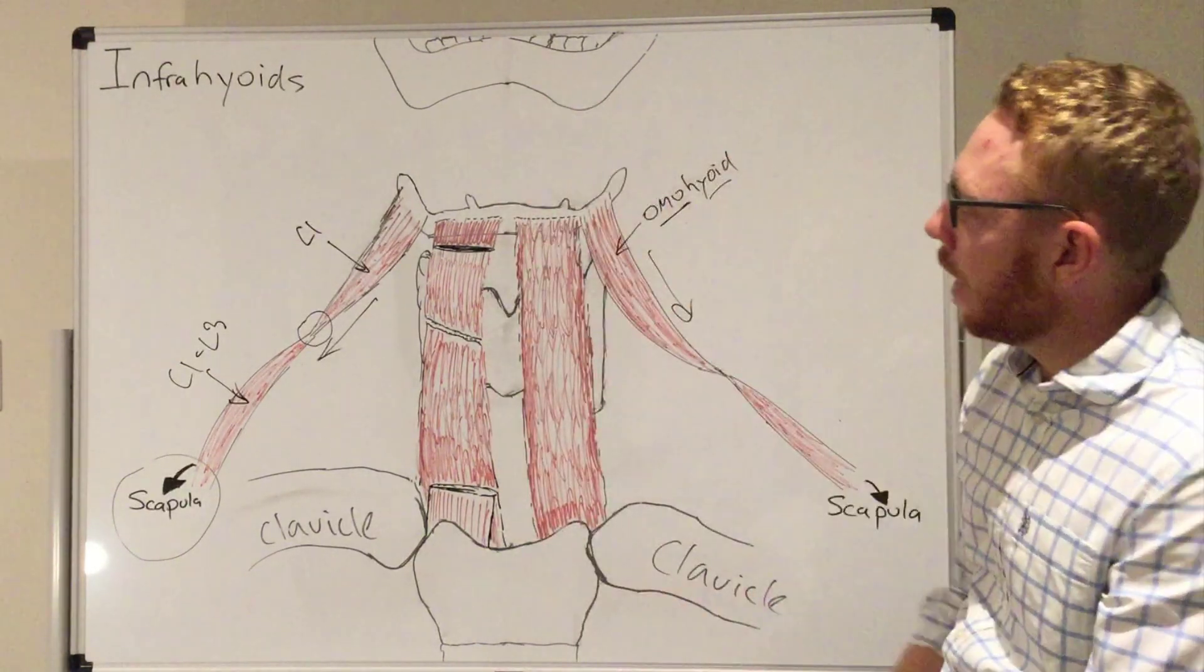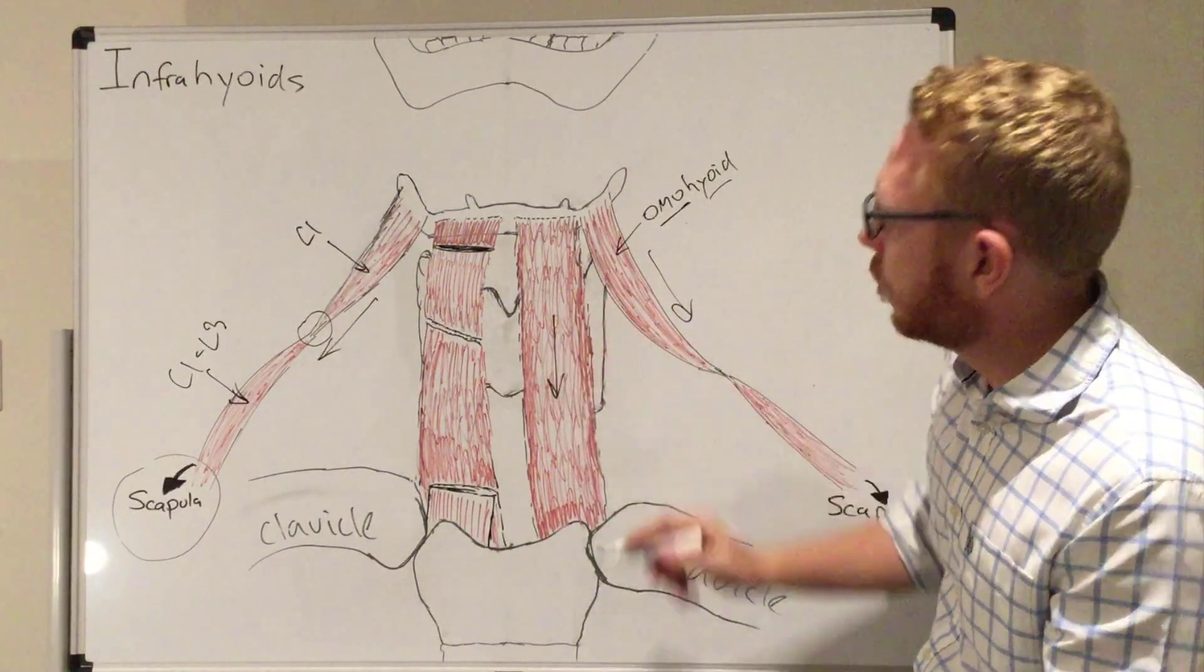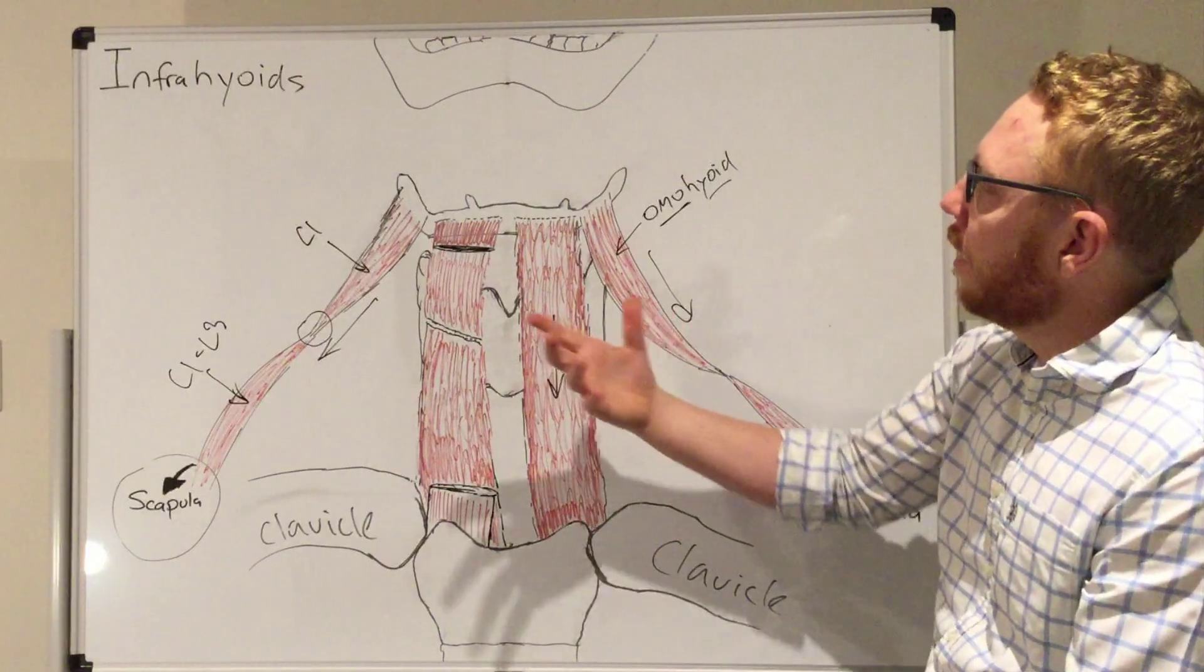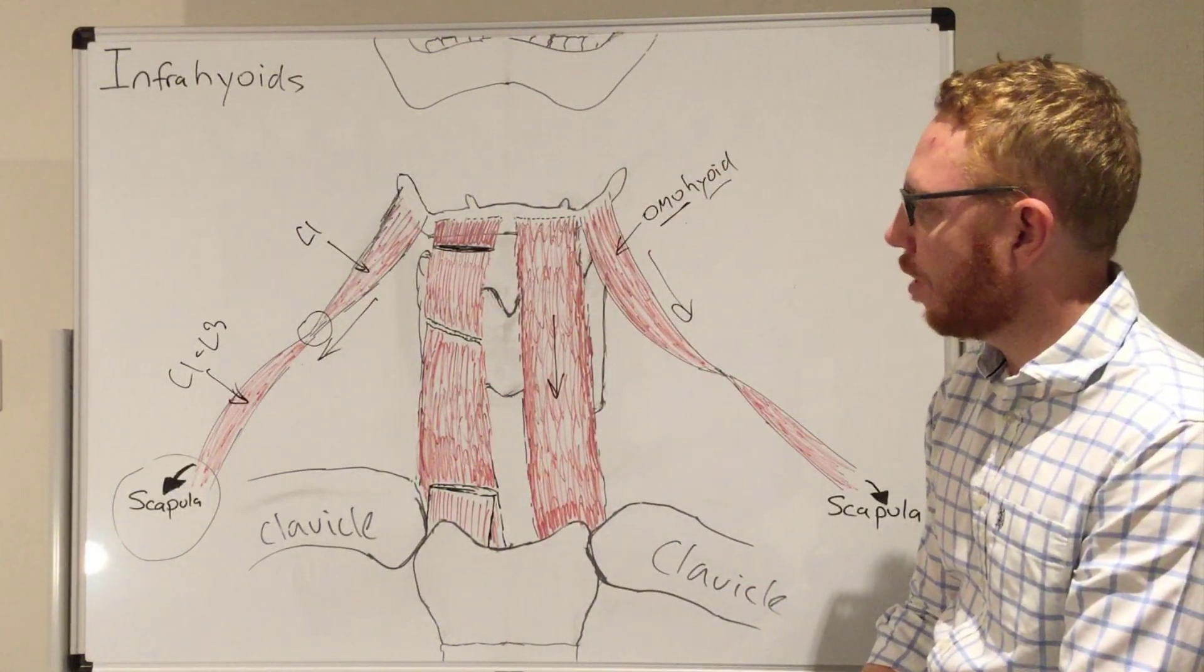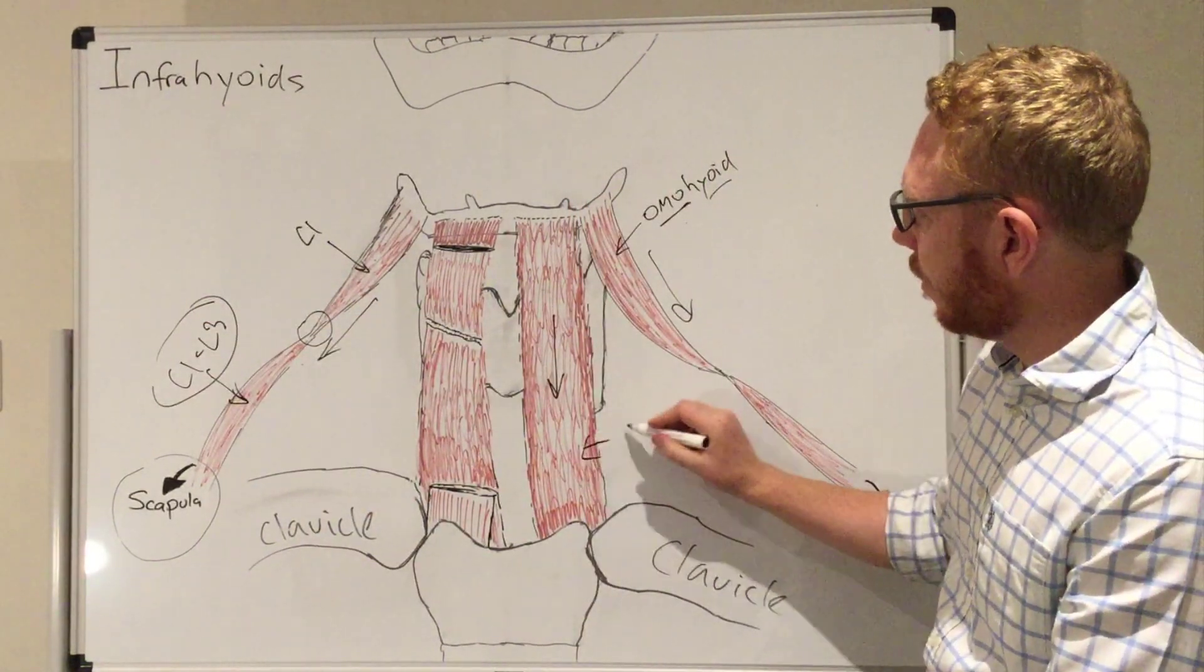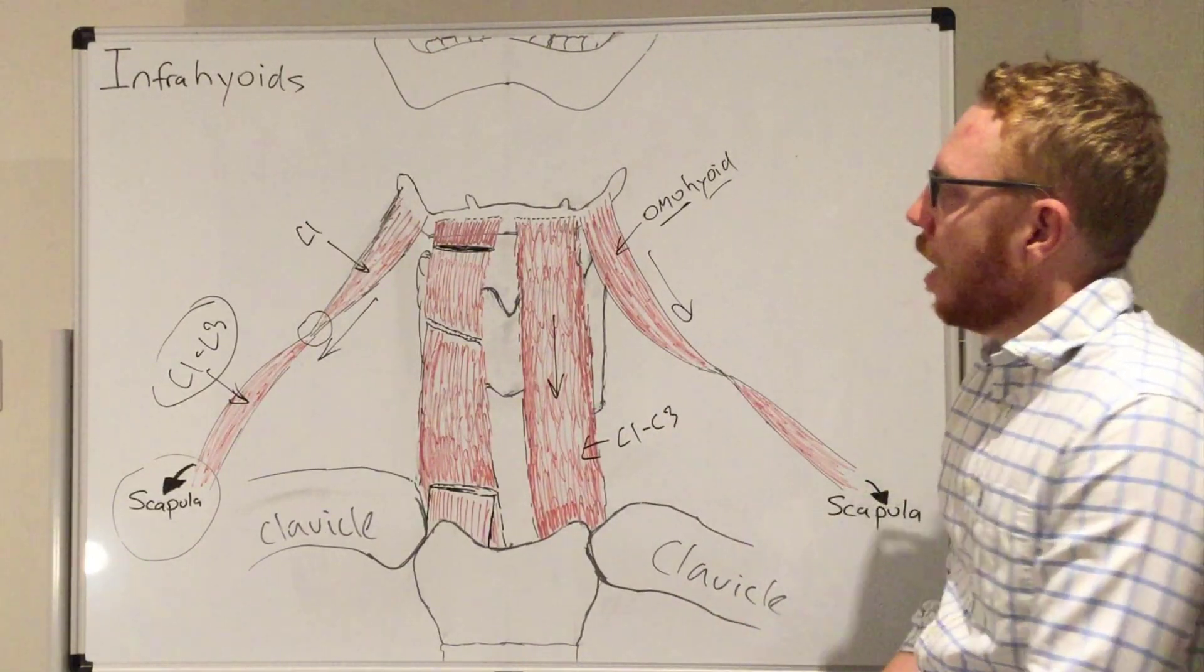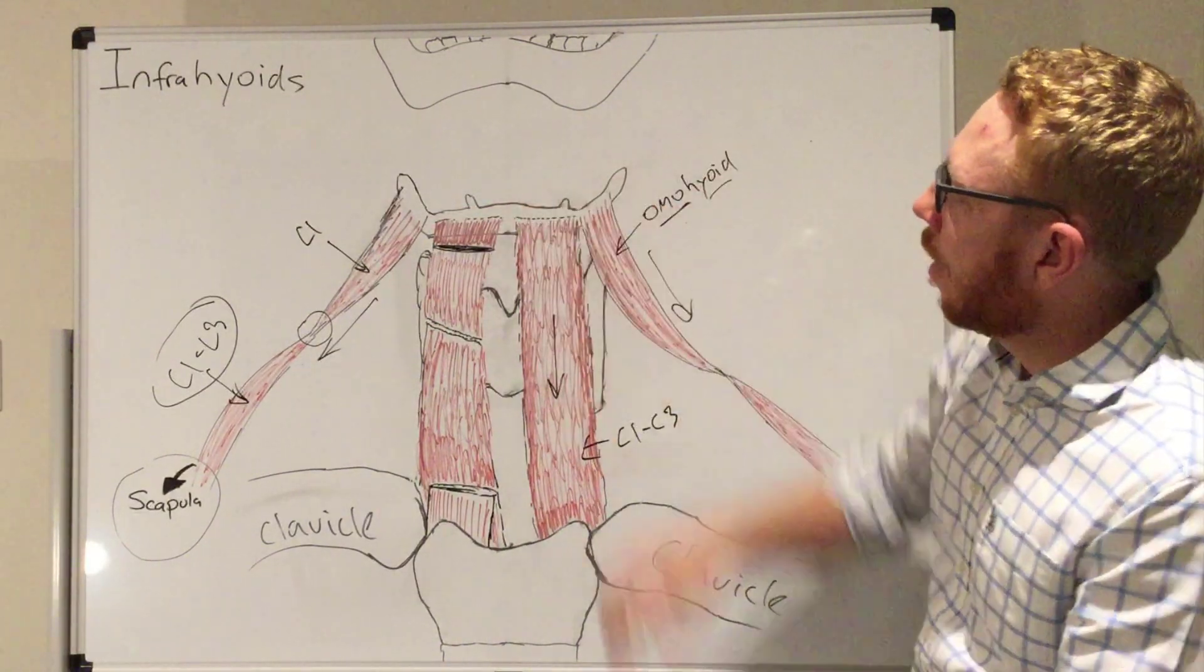It's a very long, slender muscle, and essentially it's going to do something similar to the omohyoid. It's going to draw the hyoid straight down, depress it, particularly when it's been elevated. In terms of innervation, it's going to have the same innervation as the inferior belly, so C1 to C3 for its innervation. The innervation for most of these muscles are going to be to the body of the hyoid.